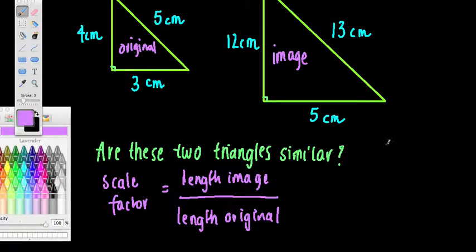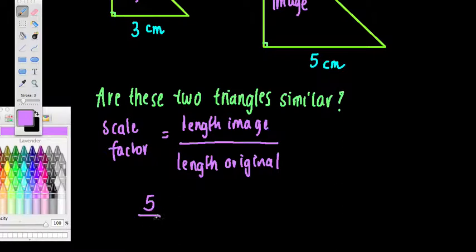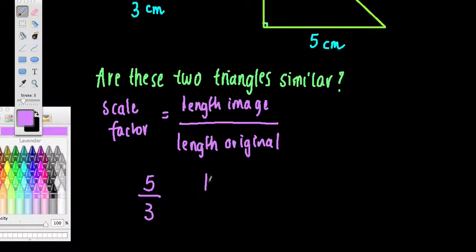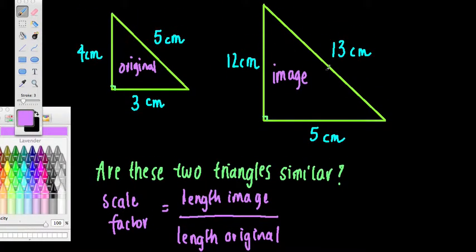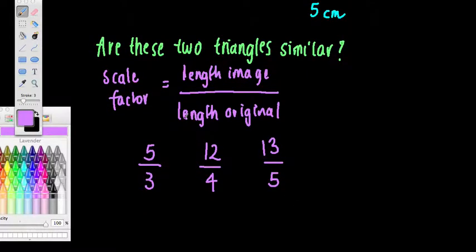If they are similar, that scale factor must be the same for each ratio. But what do we get here? 5 over 3, we've got 12 over 4, and we've got 13 over 5. Now ask yourself, are these the same? Well, 12 over 4 is 3, isn't it? 5 over 3 is not 3, and that is not equal to 13 over 5 either. If I simplify these here, they are not the same. So not equal, not equal.